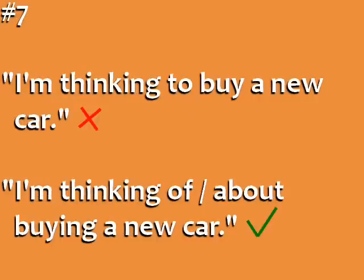Error number six: When you are considering doing something in the future, we don't use the word 'to' after 'think.' So the correct sentence would be 'I'm thinking of buying a new car' or 'I'm thinking about buying a new car.' We use the word 'of' or 'about' with the -ing form of the verb.